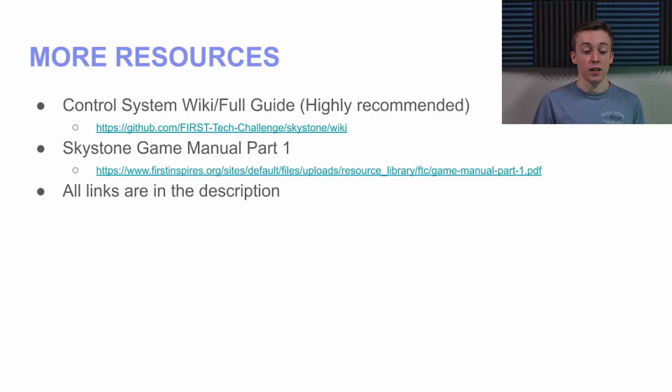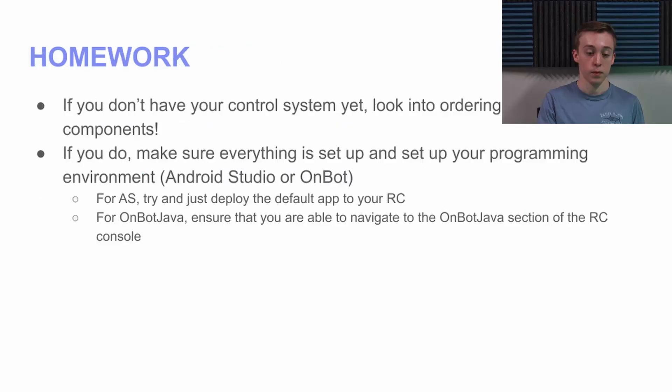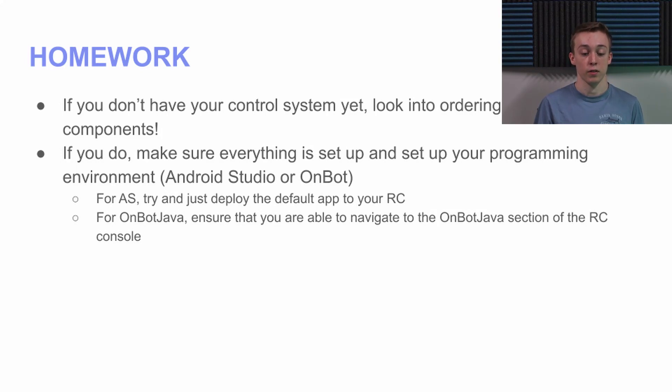That pretty much wraps up this episode. Here are some more resources — I definitely recommend checking out the complete guide to the control system written by the people who made it; all links will be below. There's also the Game Manual Part 1. Your homework this week: if you don't have your control system yet, look into ordering it and talk with your coach to get it early. If you do have it, make sure everything is set up and follow those tutorials. For Android Studio, try deploying the basic app to your phone. For OnBot Java, make sure you can get into the OnBot Java section of the robot controller. Subscribe for the rest of the series, and I'll see you next week.